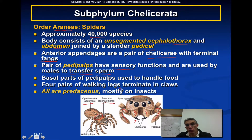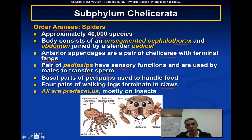There are four pairs of walking legs, and sometimes these walking legs will terminate with claws. A lot of arachnids are predaceous, and in fact all members of the order Araneae are predaceous, with most of them feeding on insects.